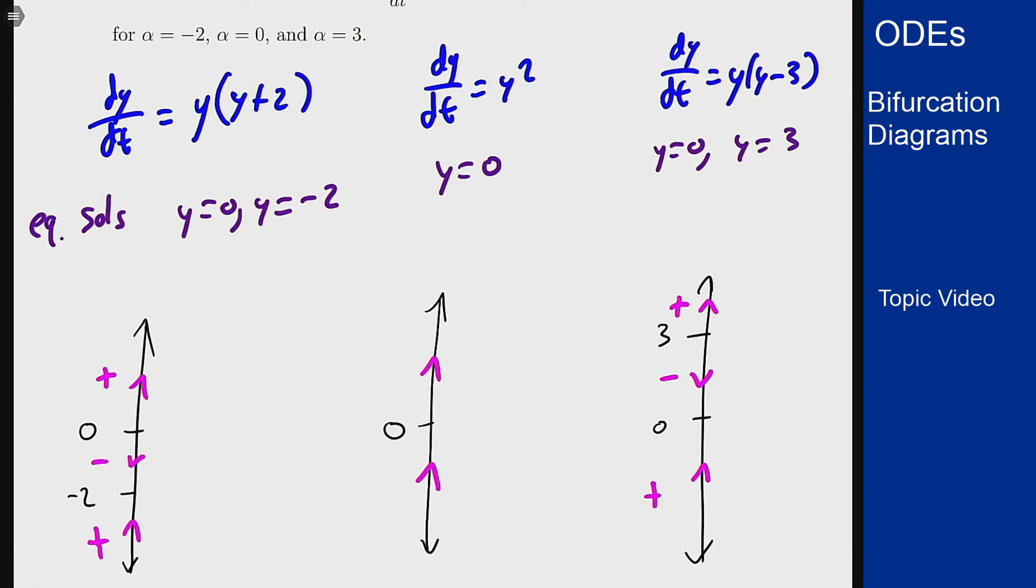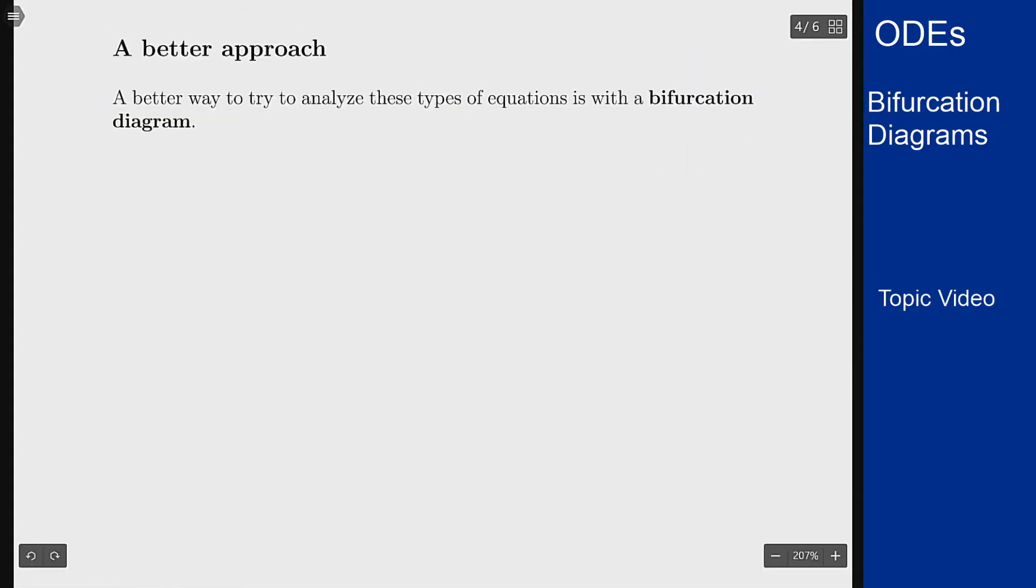One thing to notice here if you look at the zero solution, the y equals zero: for alpha equals minus two it was unstable, at zero it was semi-stable, and at three it became asymptotically stable. So the stability of the y equals zero solution has changed based on the value of alpha. There's going to be potentially values of alpha at which these behaviors change, and these will be called our bifurcation points. Is there a better way to visualize what's going on? This is what bifurcation diagrams are meant to do.